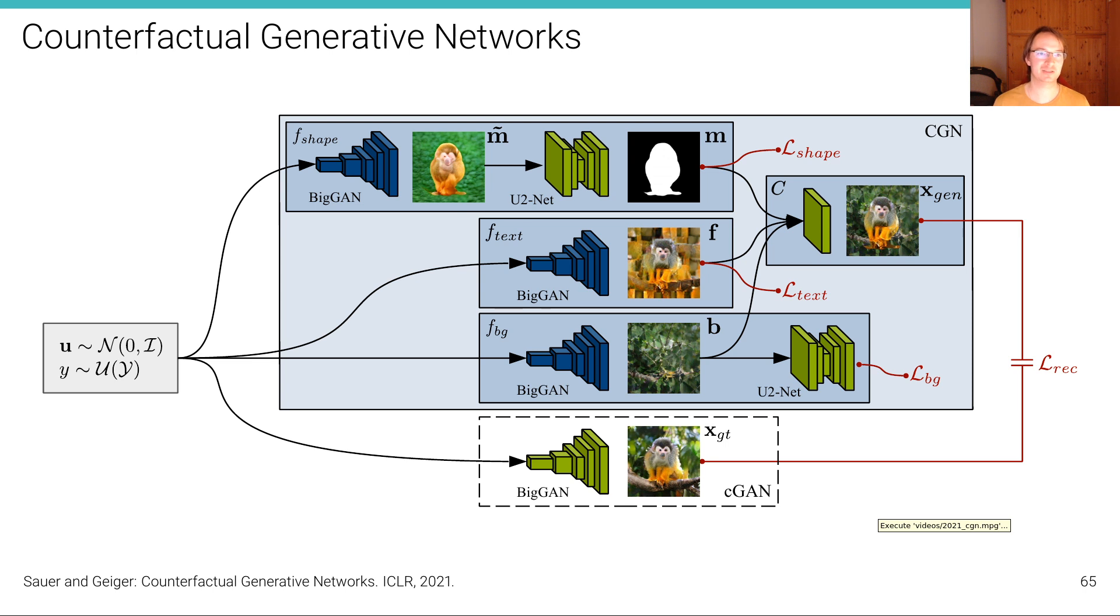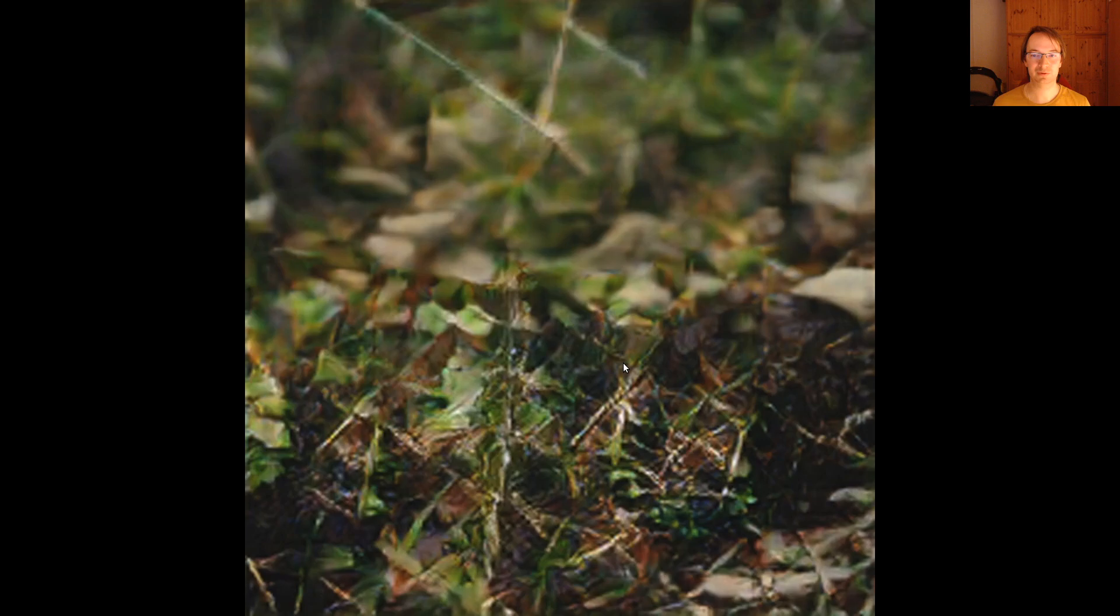And we're trying to induce weak biases into the model in order for the model to learn this disentanglement into these causal factors automatically. And then, once we have such a representation that's disentangled, we can composite arbitrary shapes and arbitrary textures and arbitrary backgrounds. As we've shown in this paper, this also leads to more robust classifiers if we use such interventions for training a classifier compared to just training on the original dataset. We can also do some latent space traversals.